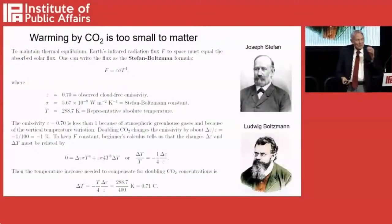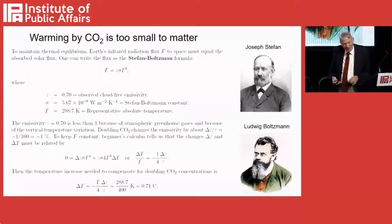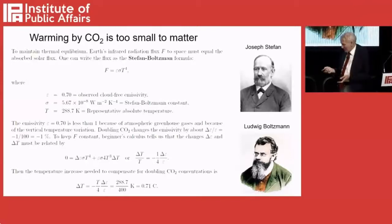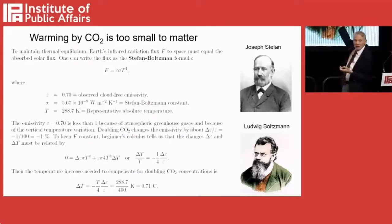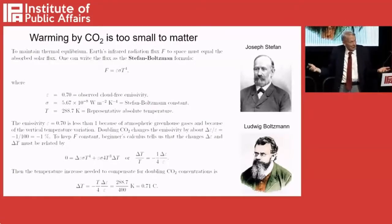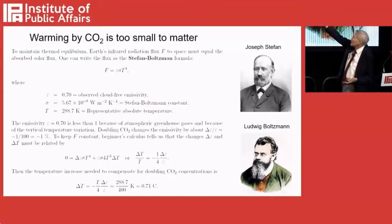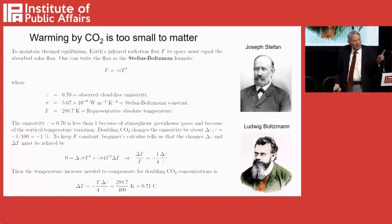This is the final hard physics slide. A 1% change is like changing the emissivity of the Earth by 1%. Here are two other interesting guys you should know about. One of them is Josef Stefan — the only Slovenian physicist I've ever heard of, but he was a great one. He discovered f equals epsilon sigma T to the fourth, that first equation there. It's called the Stefan-Boltzmann equation.